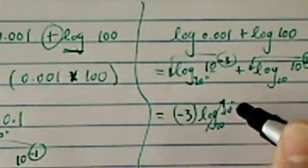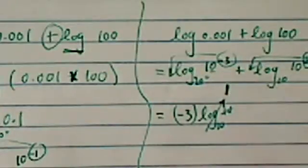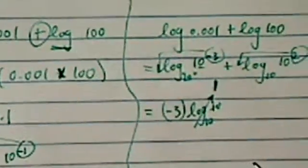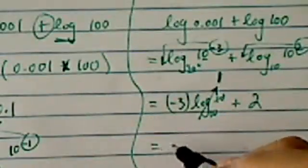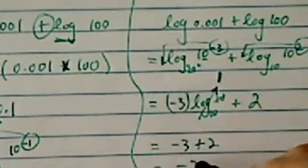So minus 3 log base 10 of 10. A lot of students say, do I cancel those two? No, not really. Actually, it's like a division. It's 1. And then plus 2 here. So minus 3 plus 2, the answer is minus 1. It's the same answer as we had before.